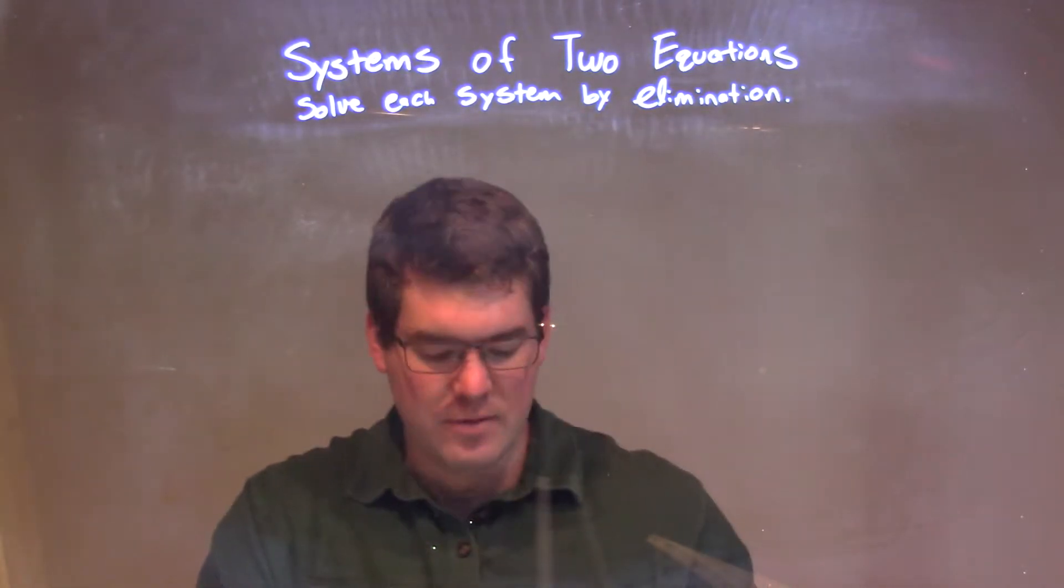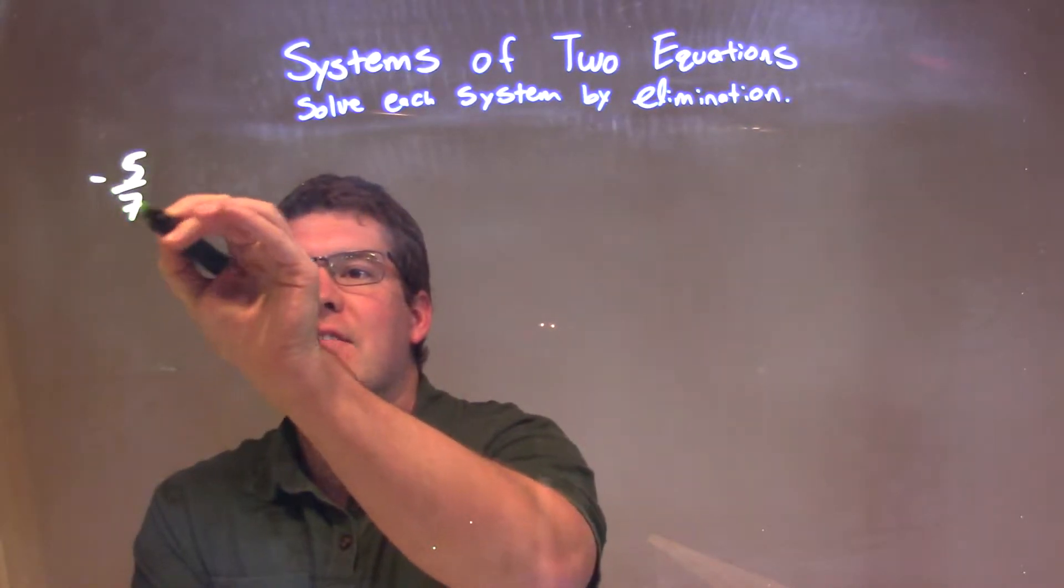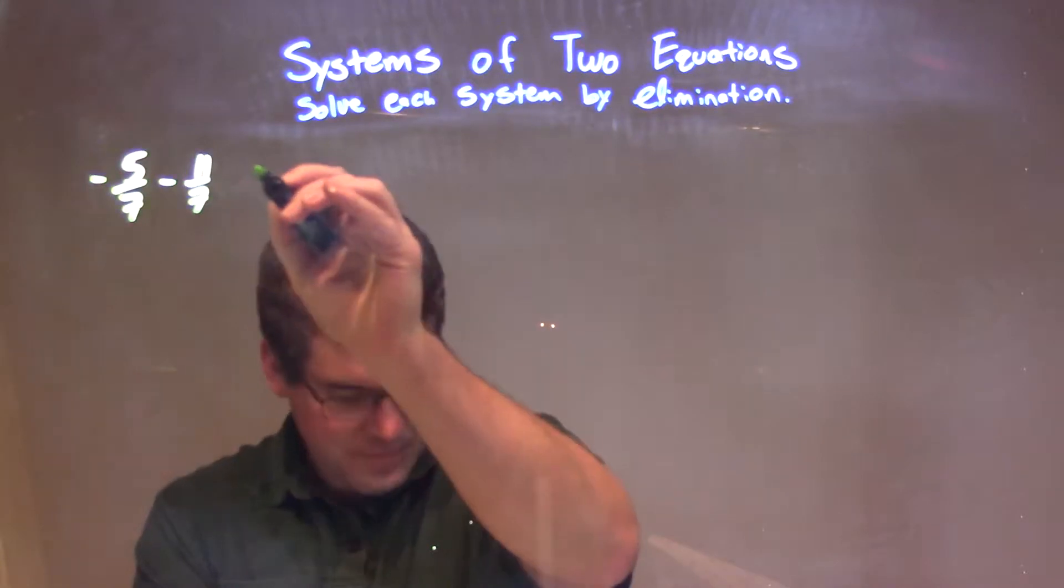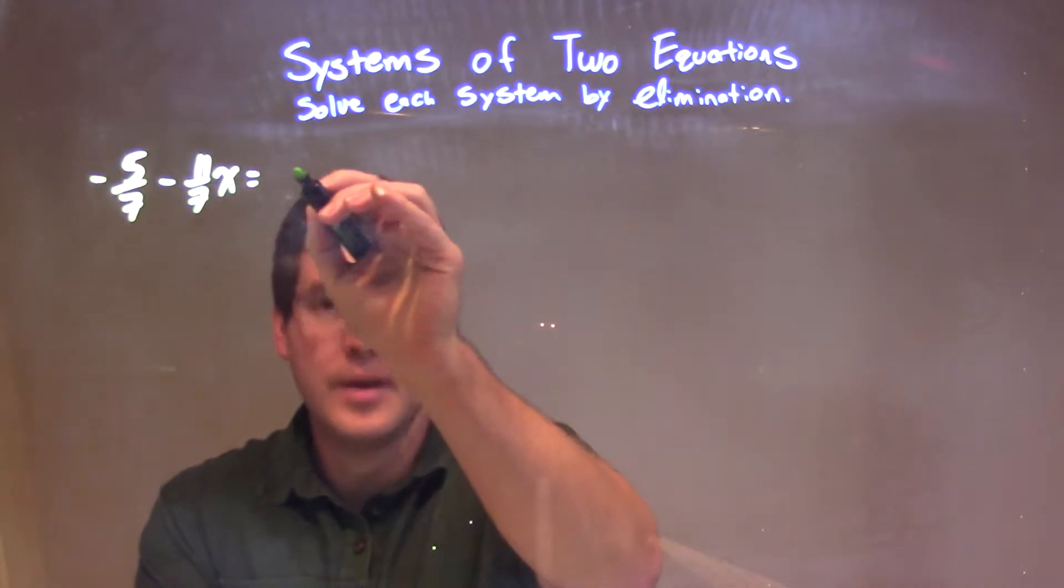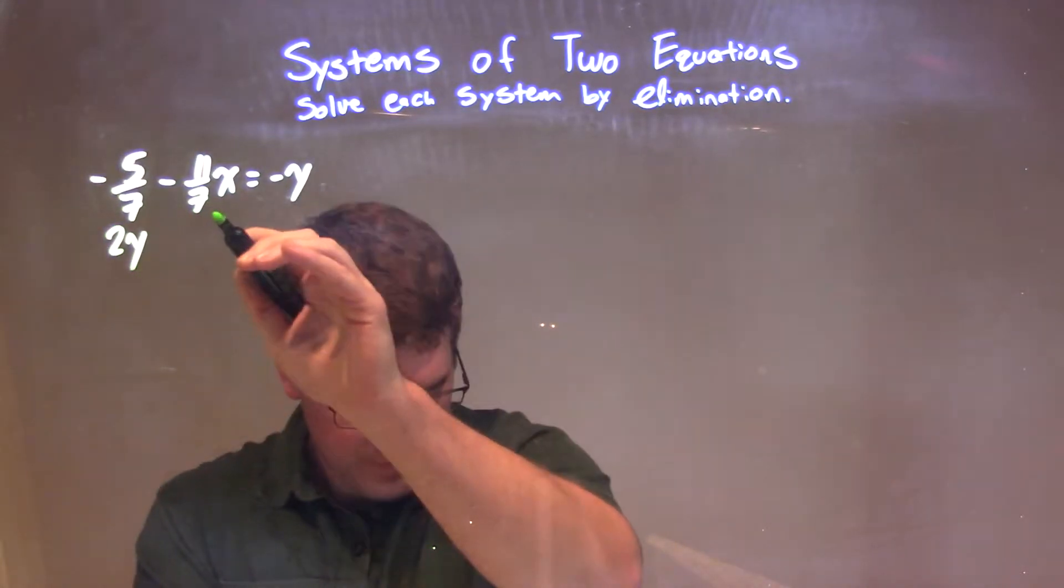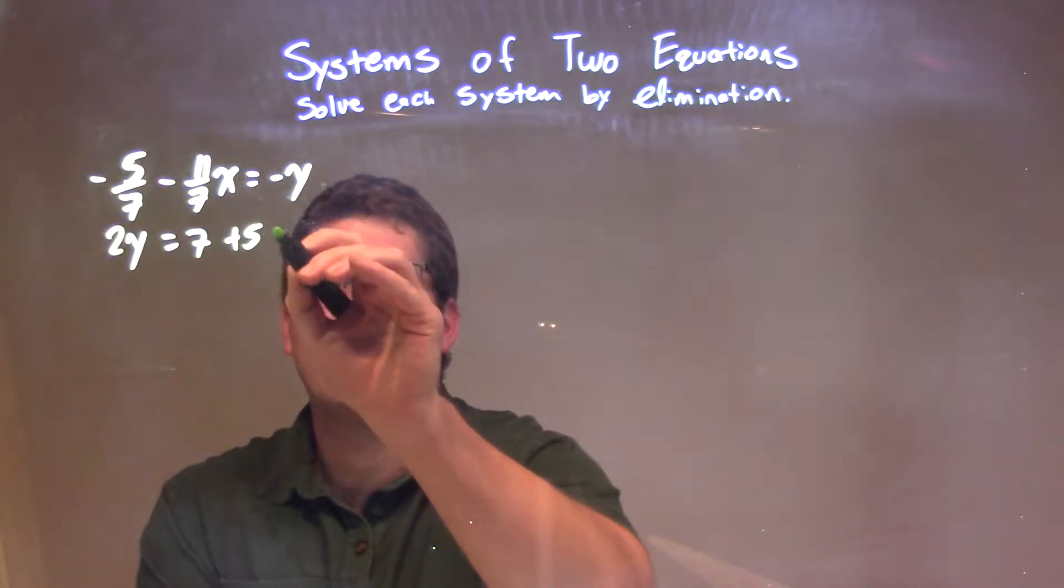If I was given this system of equations: negative 5 sevenths minus 11 sevenths x equals negative y, and the second equation is 2y equals 7 plus 5x.